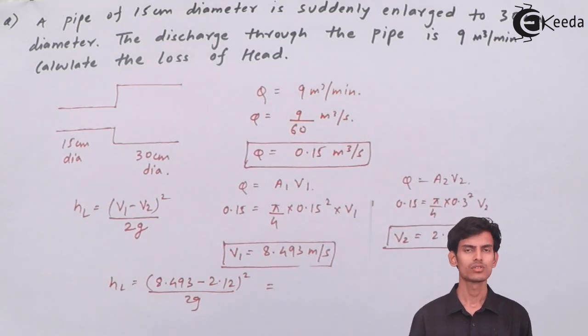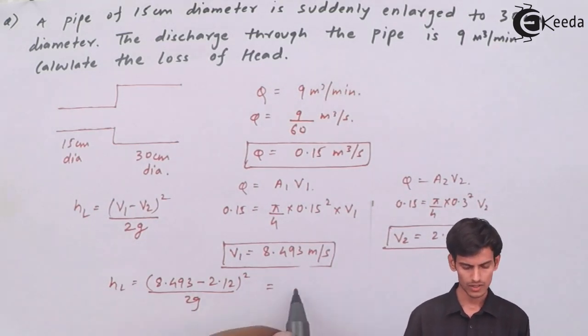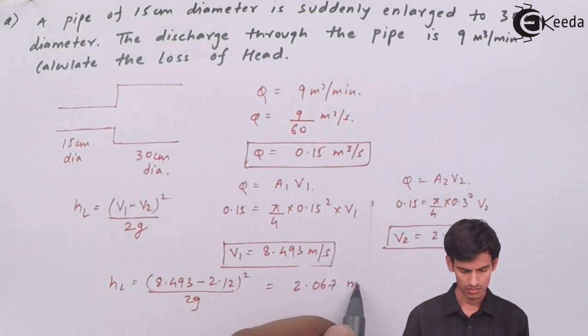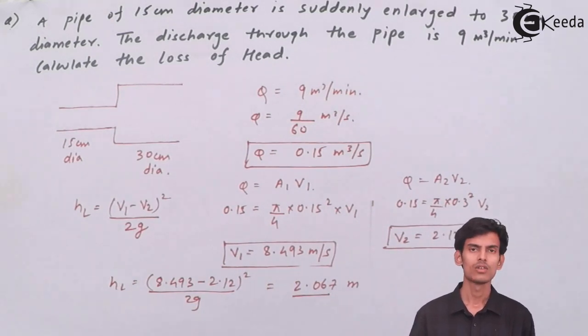Substituting the values (v1 - v2)² and dividing by 2g, we get the value of head loss is 2.067 meters. So the head loss is 2.067 meters of the flowing fluid, whichever the fluid is. If it is water, it is 2.067 meters of water - that is the head loss due to sudden enlargement.